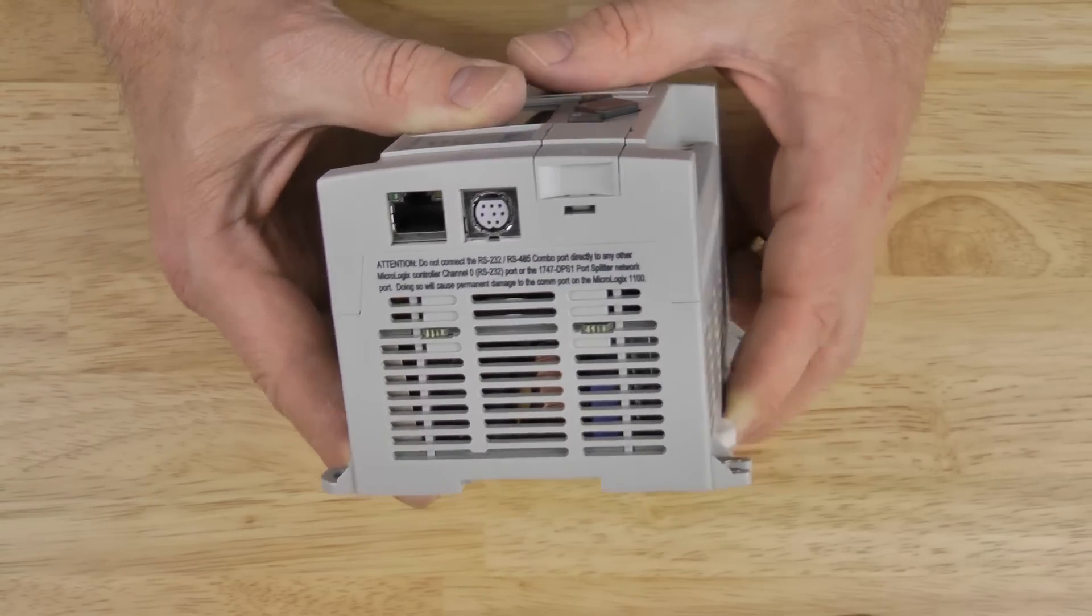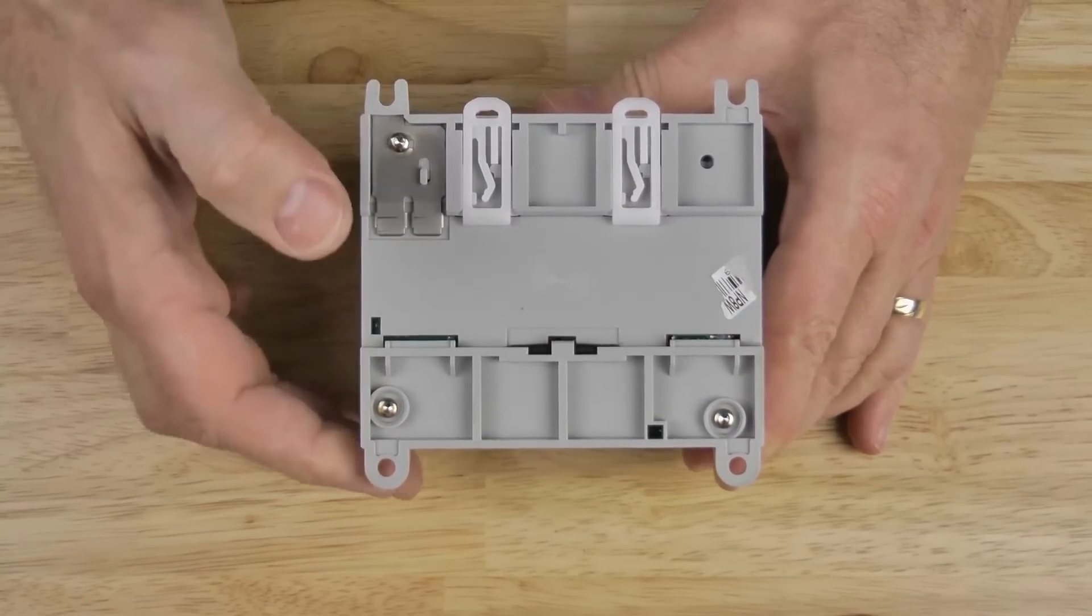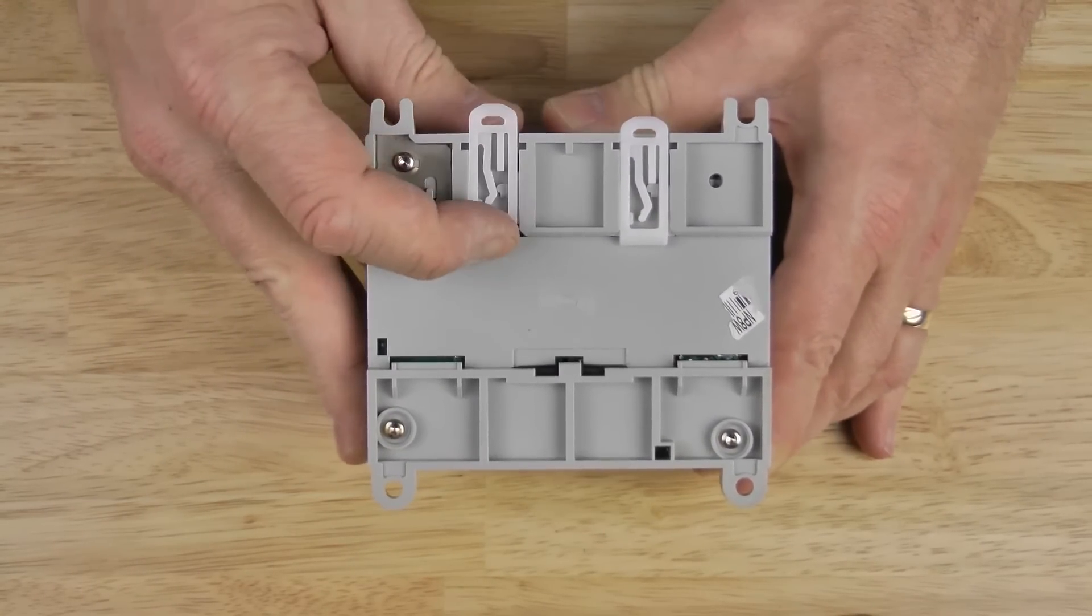On the back of the unit we can see it has two clips for DIN rail mounting. You'll also notice mounting holes on the top and bottom.